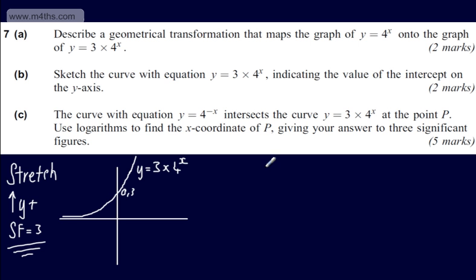So we'll have 3 multiplied by 4 to the x will be equal to 4 to the minus x. I'm just going to rewrite the right-hand side of the equation. 3 multiplied by 4 to the x is equal to 1 over 4 to the x. I'm going to multiply both sides by 4 to the x and divide both sides by 3. 4 to the x multiplied by 4 to the x will give me 4 to the power of 2x, and that will be equal now to 1 third.